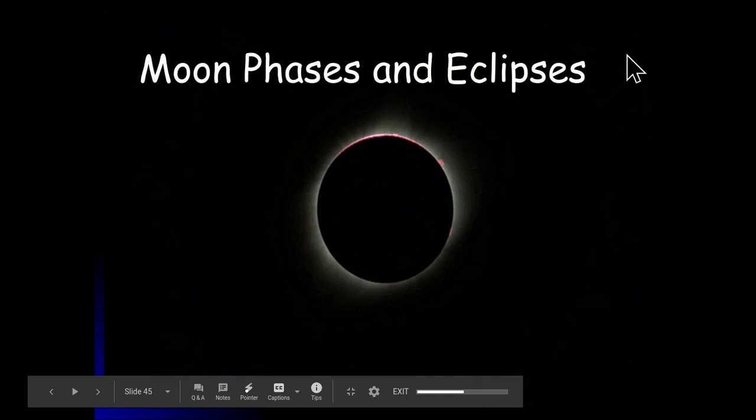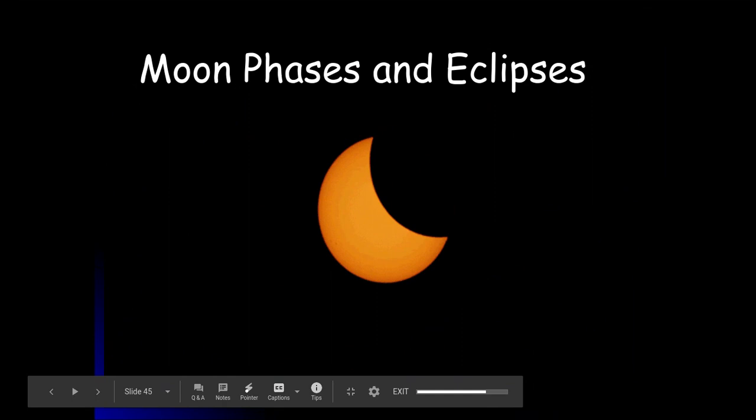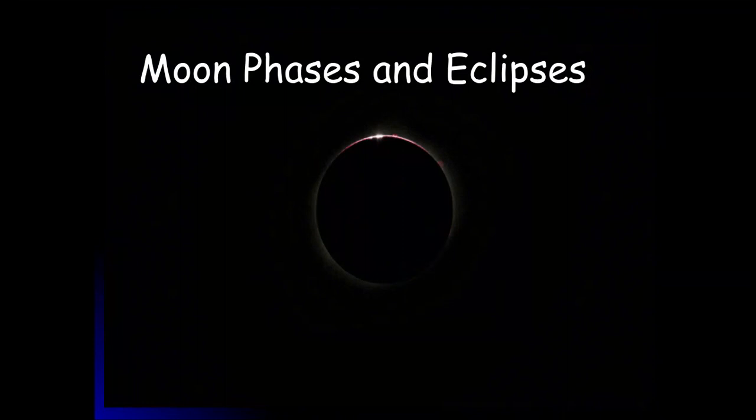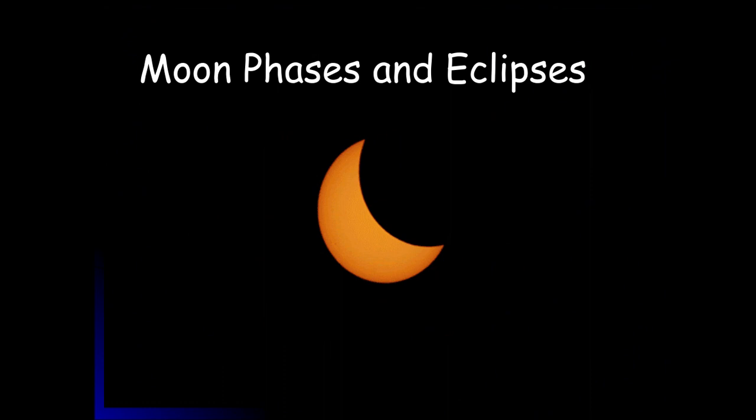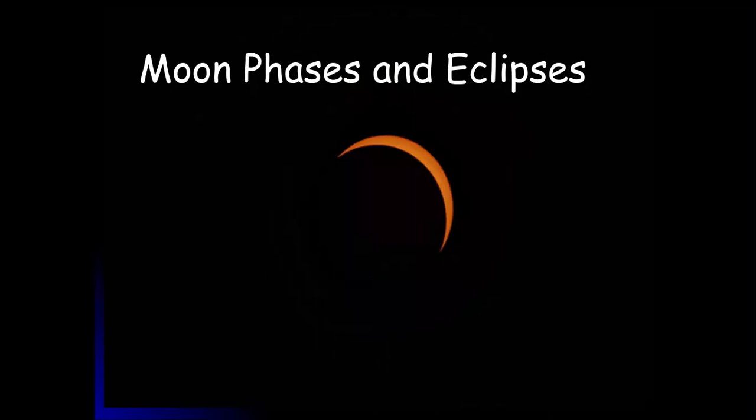Welcome to part three of the solar system discussion for the Earth Science class. This is part three and the last part of this discussion. In part one, we talked about the evolution of the solar system with respect to knowledge, and talked about what I like to call the big guns that contributed to what we know about our solar system today.